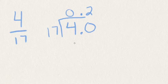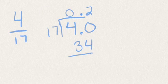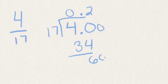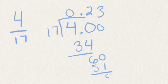2 times 17 is 34. And we have 6 left over. Bring down another 0. 17 goes into 60 three times. And 3 times 17 is 51. We have an 8, and this is going to be the last digit I do.